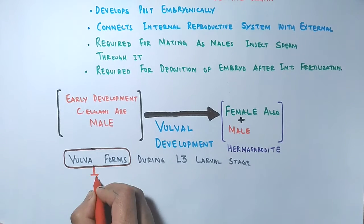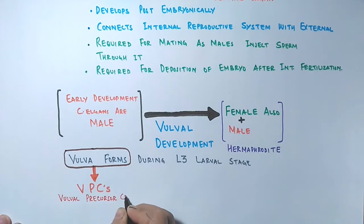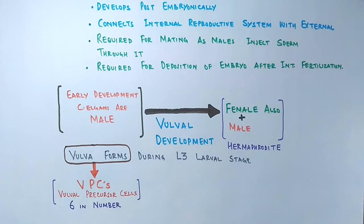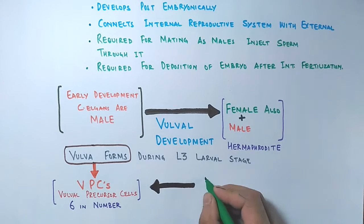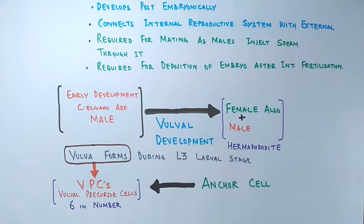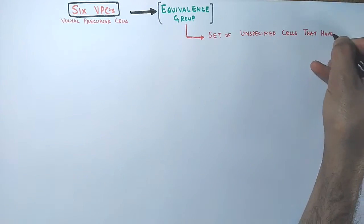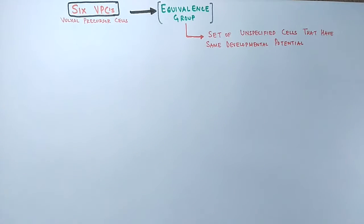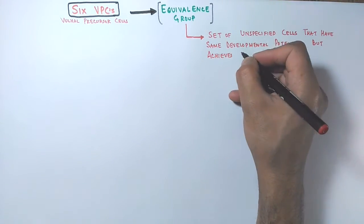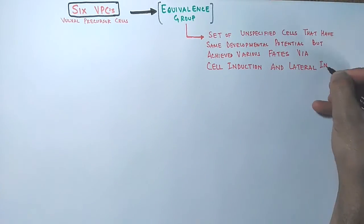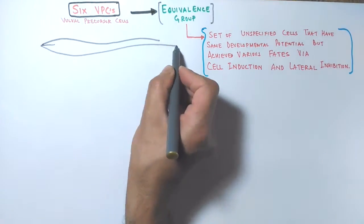The vulva forms from VPCs — vulva precursor cells — which are six in number. These VPCs are under the control of the anchor cell, which signals the VPCs via inductive signaling. These six vulva precursor cells are also referred to as an equivalence group — a set of unspecified cells that have the same developmental potential, meaning all cells have the same capability to develop into any organ or tissue, but achieve different fates via cell induction and lateral inhibition.